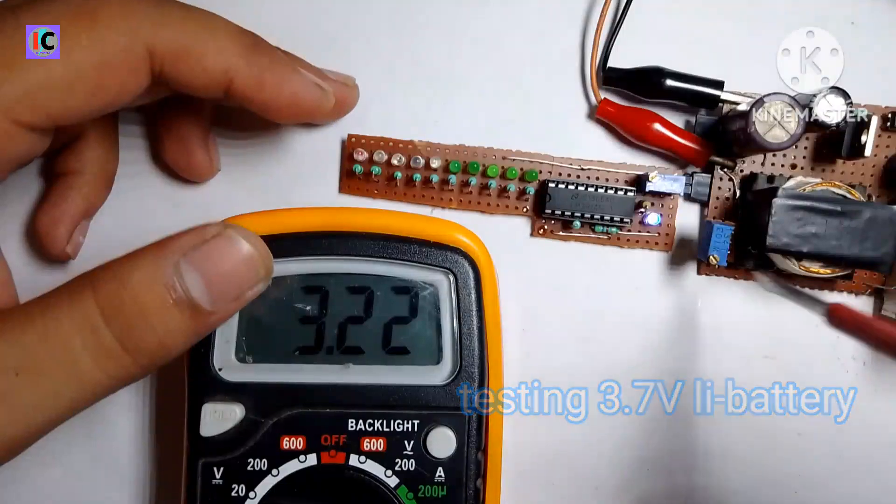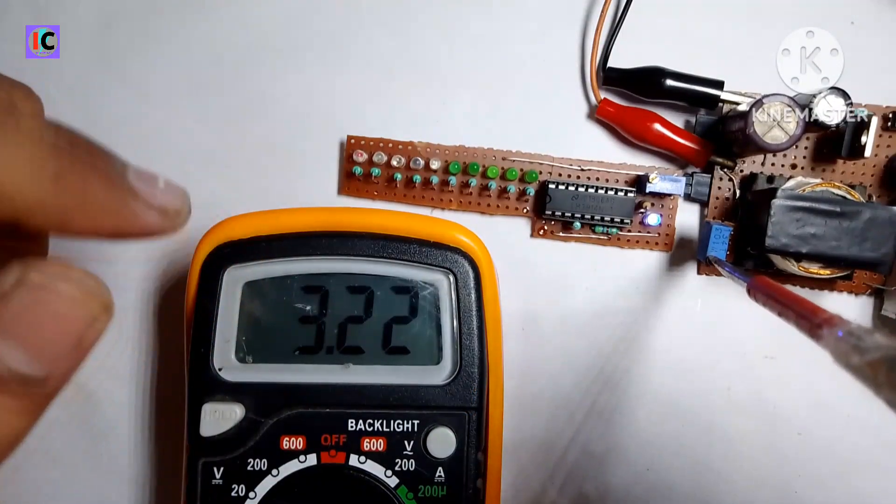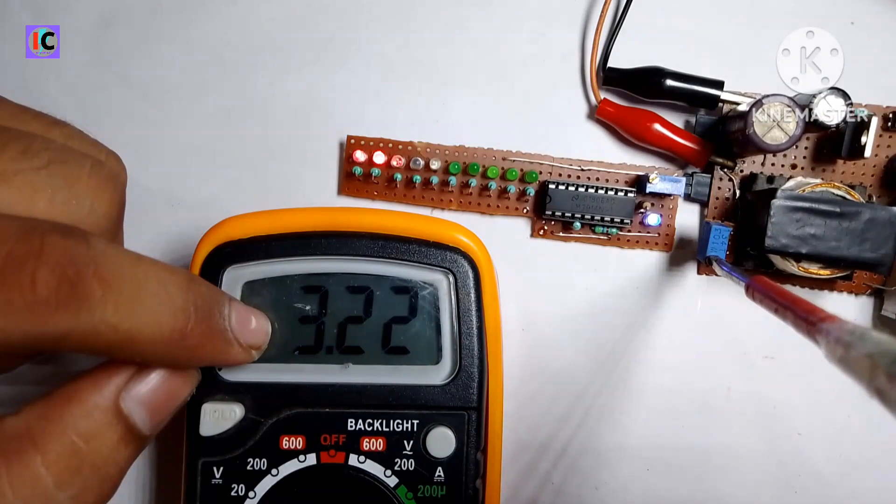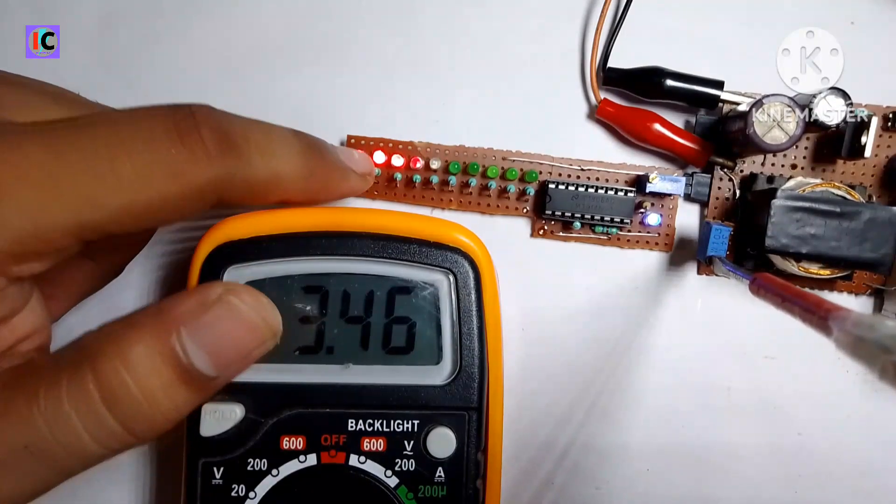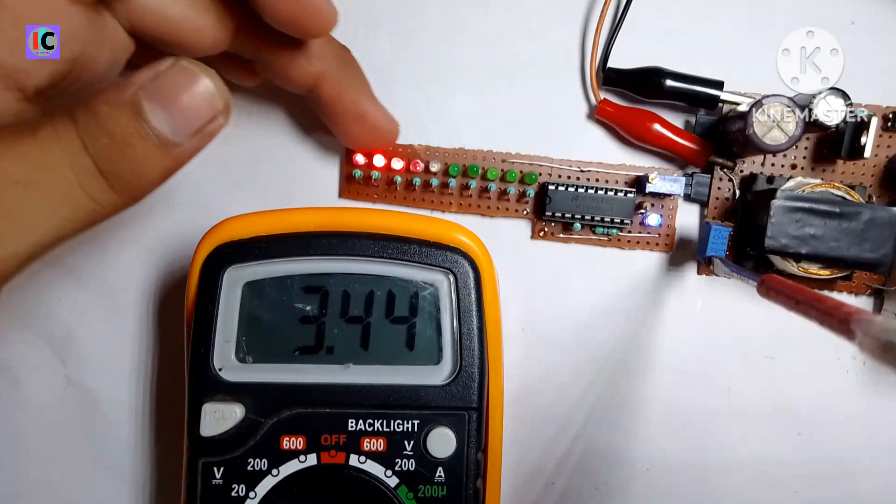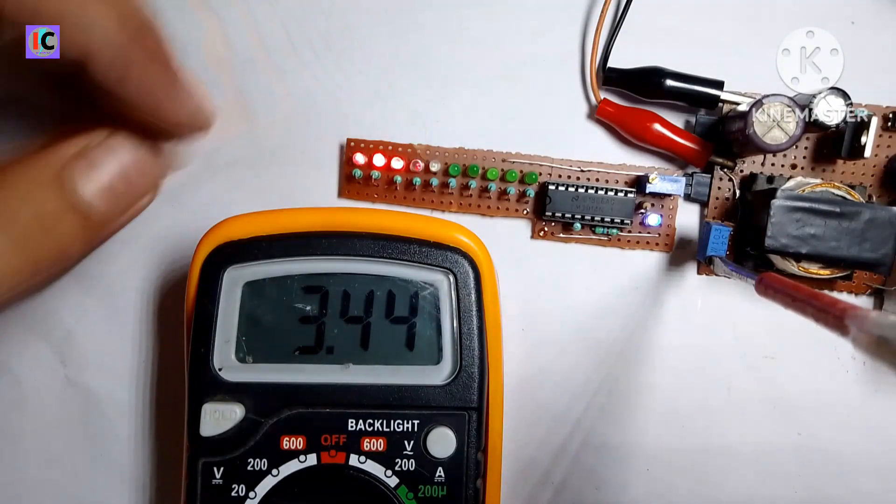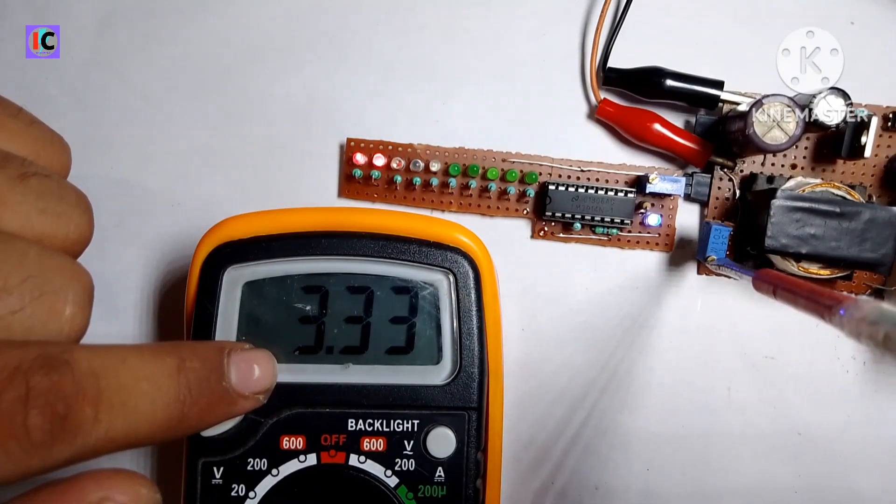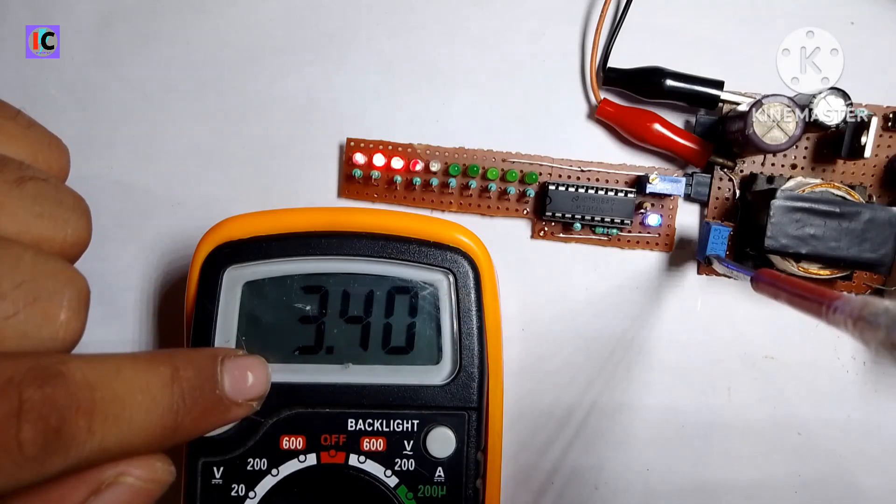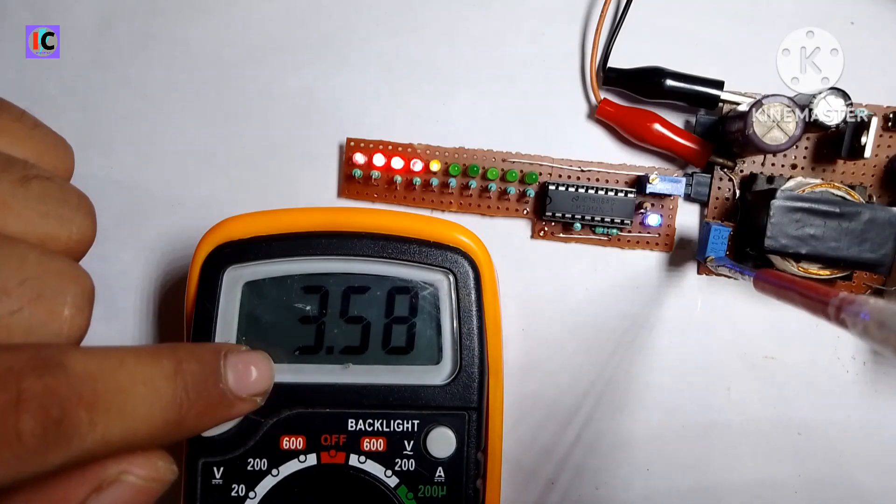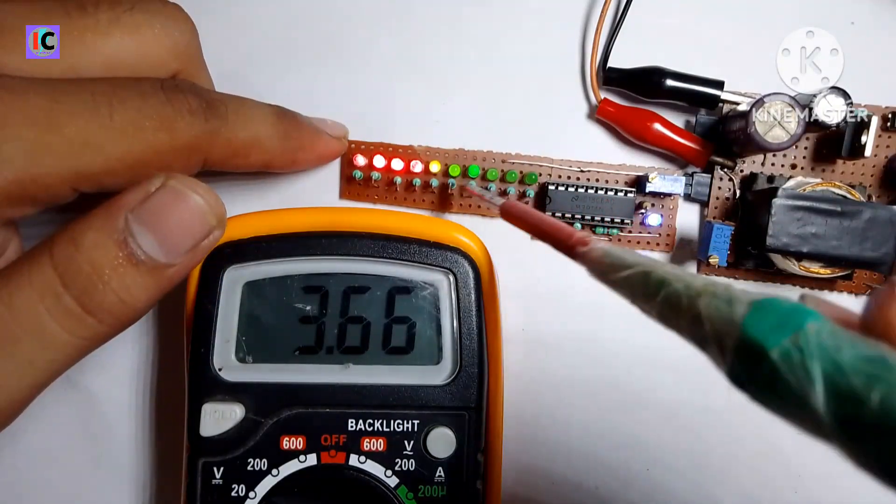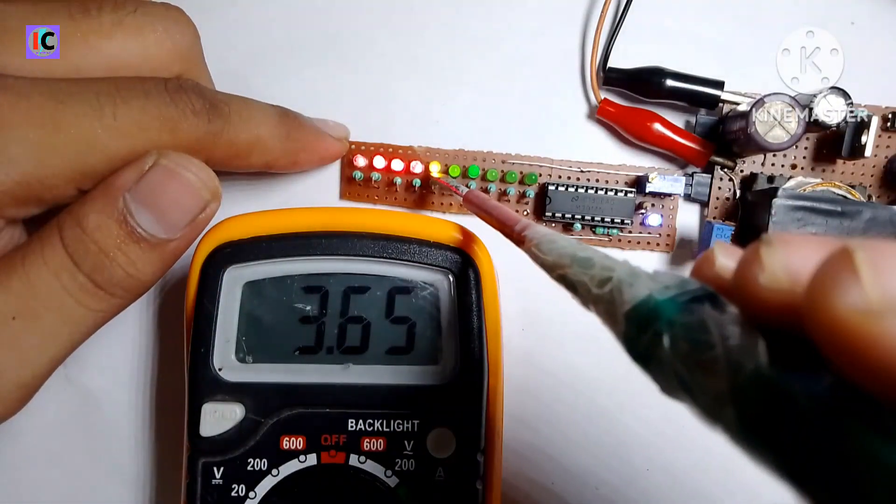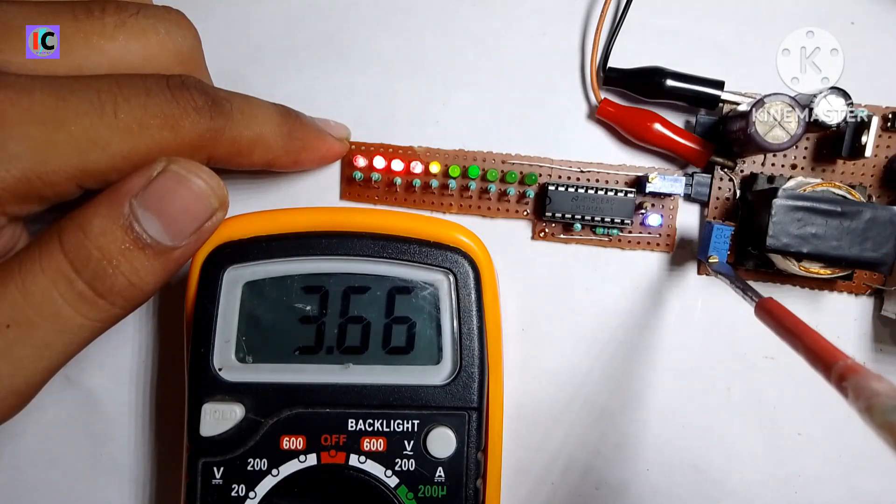I have connected the module and also calibrated accordingly. As I increase the voltage on the multimeter, you can see the LED indication on the module also increases from red LED to yellow LED. At full position, the green LED will indicate the full voltage of the 3.7 volt lithium battery.